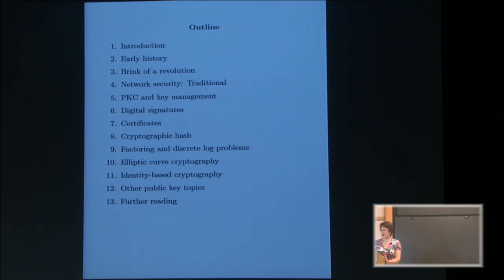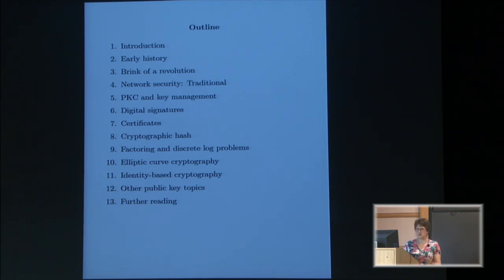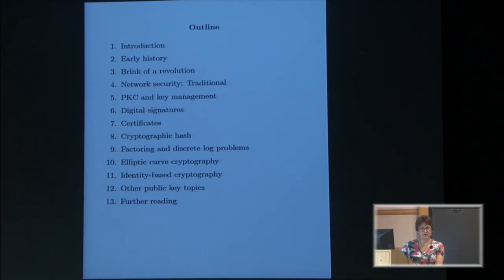I'll talk about introduction, early history, and network security in a traditional sense before Public Key, and also the role of Public Key in key management, which is its main application, and digital signatures, certificates — words you've probably heard but might not know yet. Something about cryptographic hash, and the underlying math problems which underpin security of much public key: factoring and discrete log. Then we have elliptic curve cryptography, identity-based cryptography — a very interesting side topic most of you haven't heard of — and a few references.